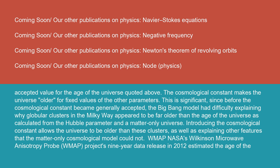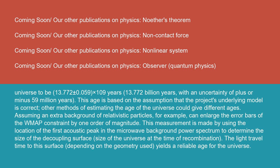WMAP: NASA's Wilkinson Microwave Anisotropy Probe (WMAP) project's nine-year data release in 2012 estimated the age of the universe to be 13.772 plus or minus 0.059 times 10^9 years (13.772 billion years), with an uncertainty of plus or minus 59 million years. This age is based on the assumption that the project's underlying model is correct. Other methods of estimating the age of the universe could give different ages. Assuming an extra background of relativistic particles, for example, can enlarge the error bars of the WMAP constraint by one order of magnitude.